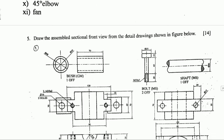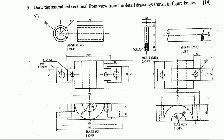Question number 5: Draw the assembled sectional front view from the detail drawings shown in the figure below. This carries 14 marks. The figure shows different parts: bush, bolt, shaft, base, and cap. These are the parts you need to assemble. Draw the assembled sectional front view. This is from Chapter 4. Thanks for watching, I hope you'll join me in the next video.